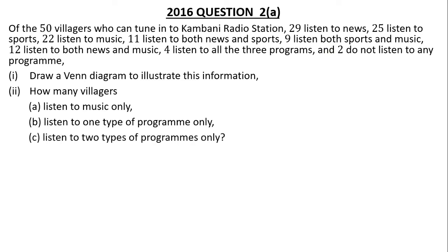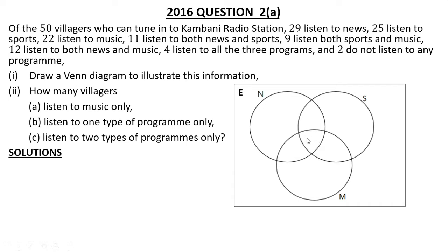How many villagers listen to two types of programs only? When illustrating on the Venn diagram, the first part we have to fill in is the intersection of all three sets. We have 4 who listen to all three programs — that's where we start. This is the region where we have news, sports, and music. Put 4 there. Then 11 listen to both news and sports, so for the news and sports only region, we subtract 11 minus 4, which gives us 5.